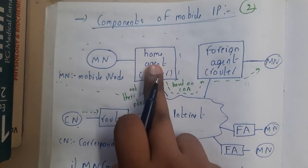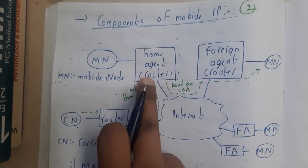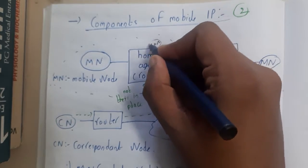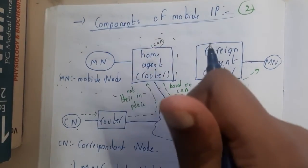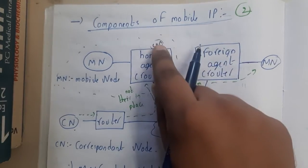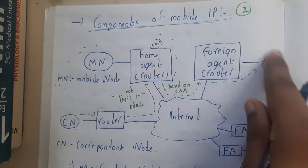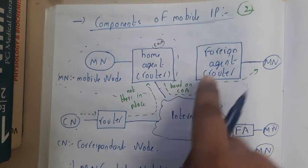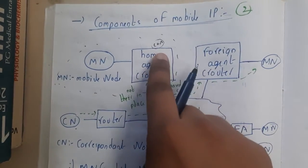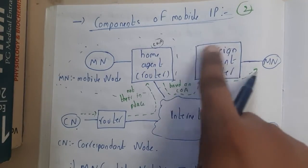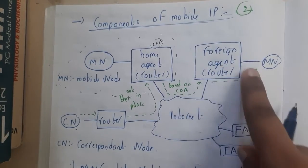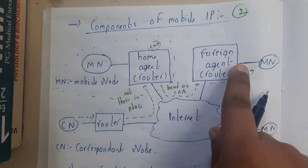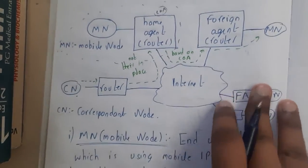If he is not at home, it will store a value called COA — the Care of Address — which defines exactly where he is. That address will be stored here. Assume he is in this area; the request is then passed on to the foreign agent. Since he is not at his home but at some other place, that place is called the foreign agent. From there the request will be sent to the MN and communication moves in this way.